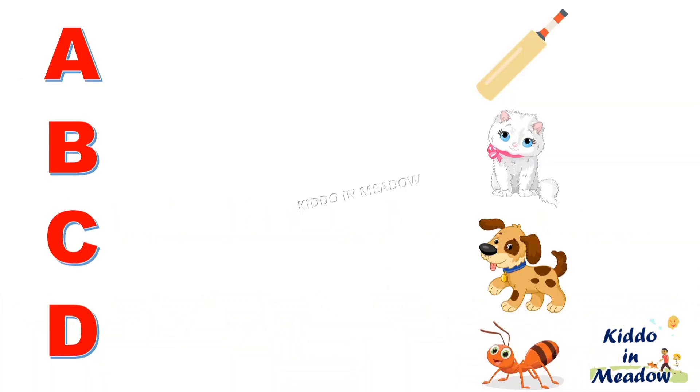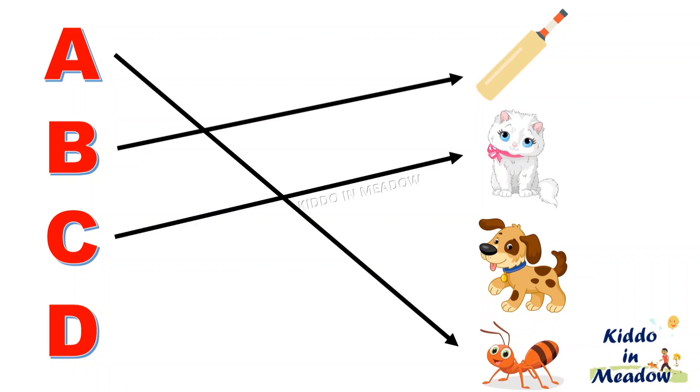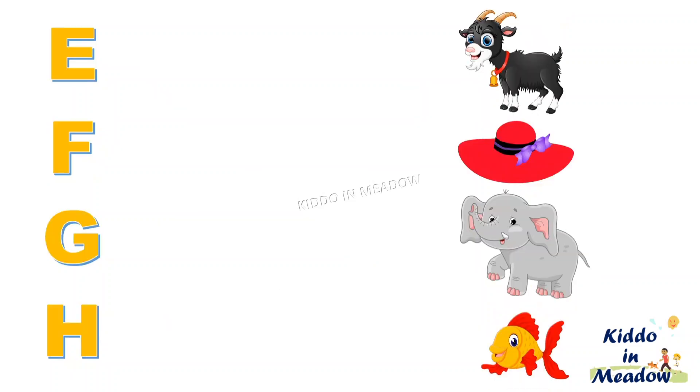A for Ant, B for Bat, C for Cat, D for Dog, E for Elephant.